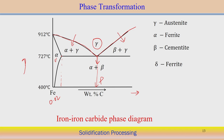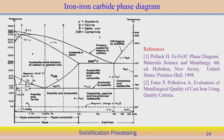Looking at the actual iron-iron carbide phase diagram from the reference, the weight percentage of carbon goes up to 6.67, which is the maximum solubility of carbon in iron. Within that solubility limit, there are many different phases with respect to temperature. If the carbon content is below 2 weight percent, the material is known as steel; between 2 and 6.67 weight percent carbon, it is categorized as cast iron.